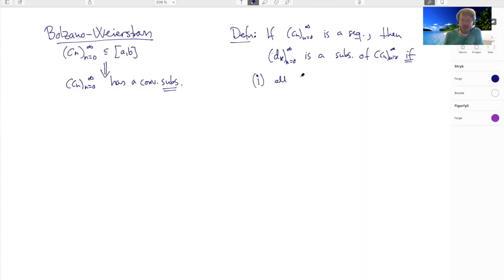One, all dk appear in the sequence cn. So they're all terms from this thing here. And two, the dk respect the order of cn. This formulation here is a bit vague, so let's call it definition like this. Let's explain what I mean here by an example.